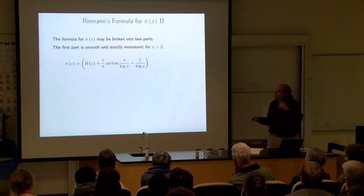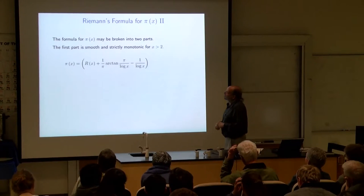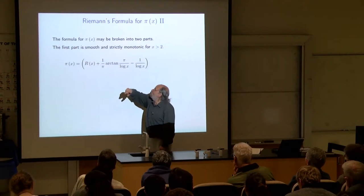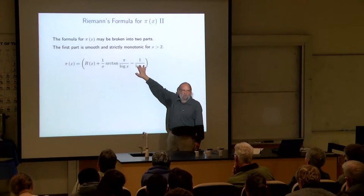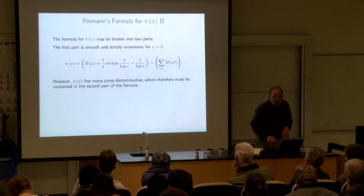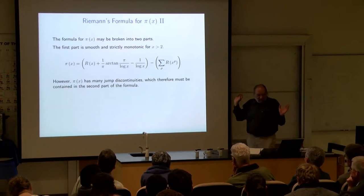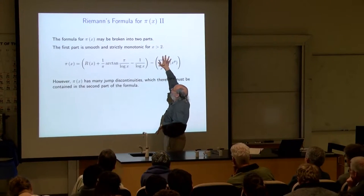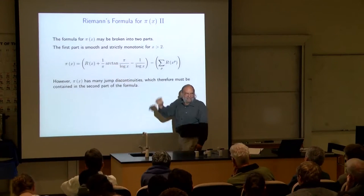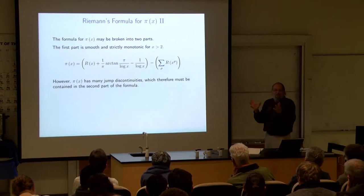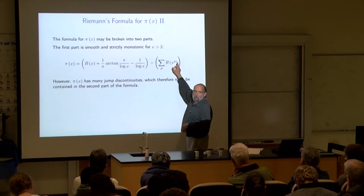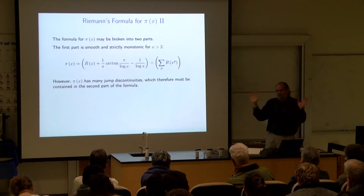We can think of the formula in two parts. The first smooth part — R(x) plus a couple of terms involving arctan and log — is a smooth, strictly monotonic function for x greater than 2. The smaller terms become unimportant as x grows. But there's no way to avoid another term, because π(x) is not a smooth function — it has discontinuities. So we need something else to generate those jumps. We found that if you evaluate R at x^ρ, where ρ is a non-trivial zero of the zeta function, and sum over all those zeros in the proper order, you get the discontinuities.